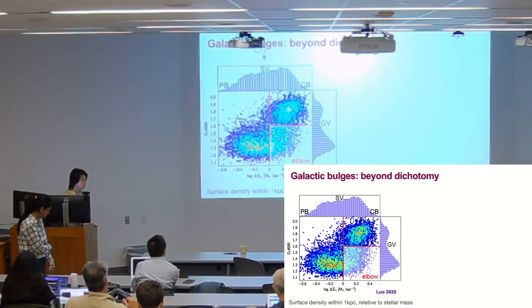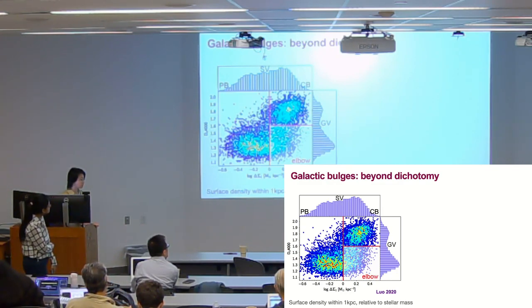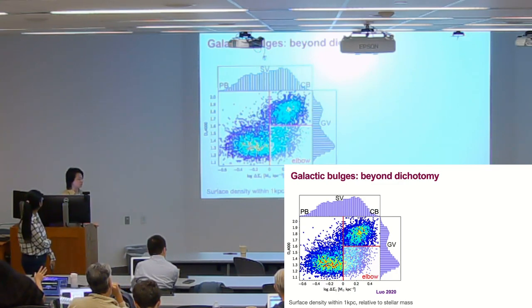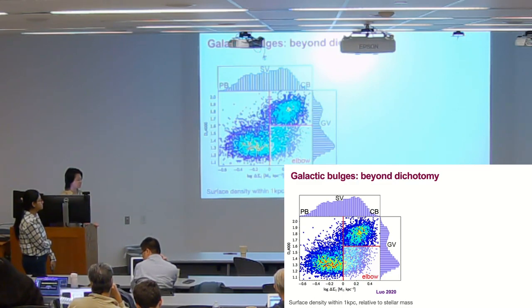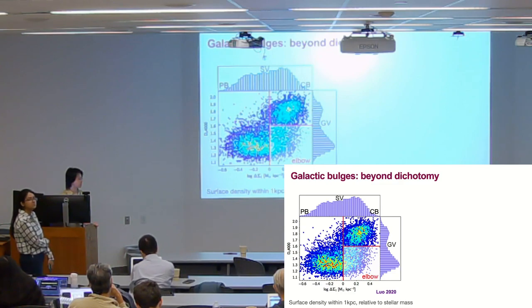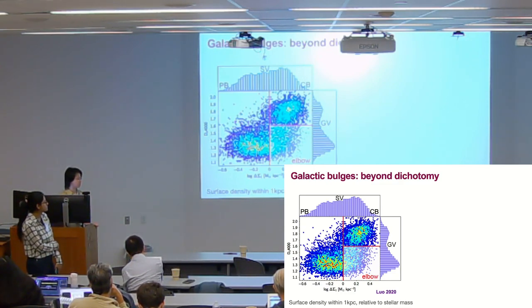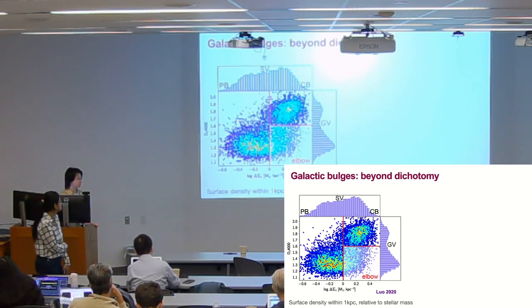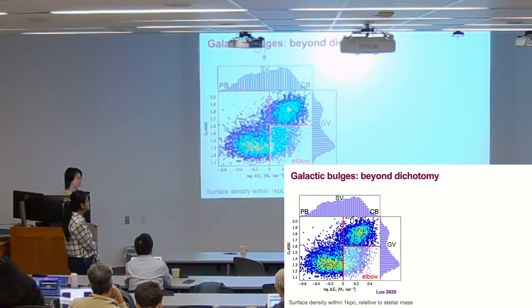Speaker response: I don't have that comparison for my sample here, but the comparison is done in a paper — they compared delta sigma 1 with the Kormendy relation using a sample from a 2009 paper, and delta sigma 1 is quite consistent with the Kormendy relation. The elbow galaxies tend to be higher Sersic index, which is consistent with the interpretation. The more organized the rotation, the more spiral-like the galaxy, and the less central star formation.